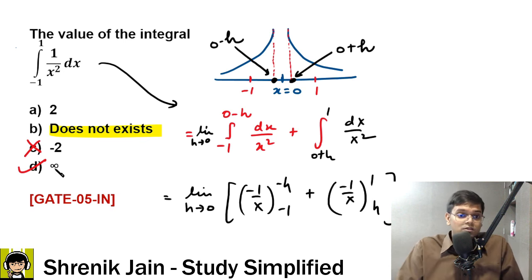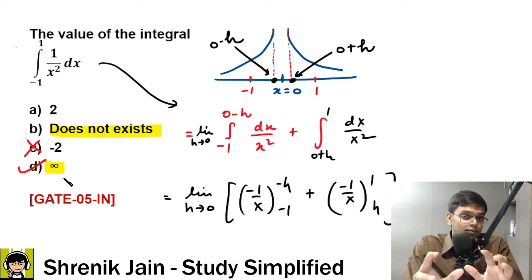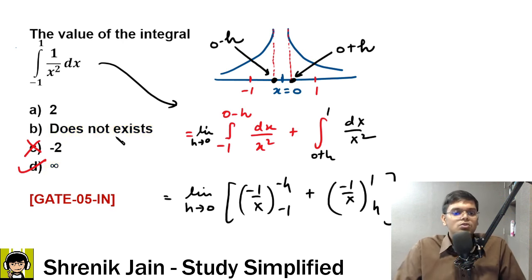But if instead of infinity they would have written something like 0, then what would be the answer? Then 'does not exist' makes sense. 'Does not exist' would be touched.